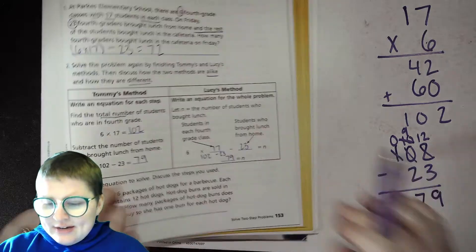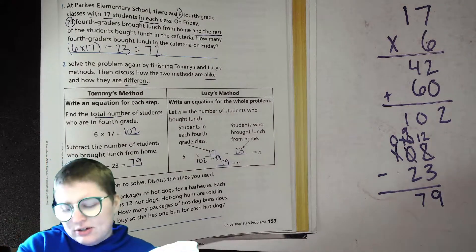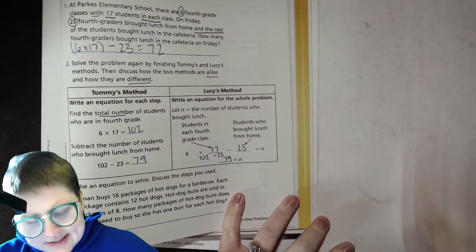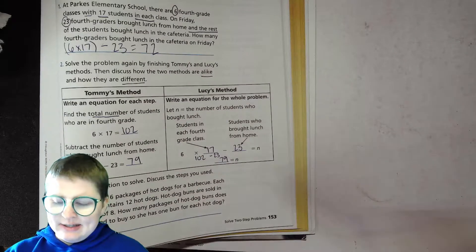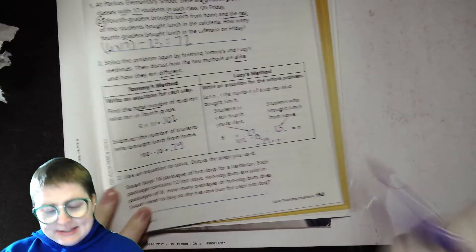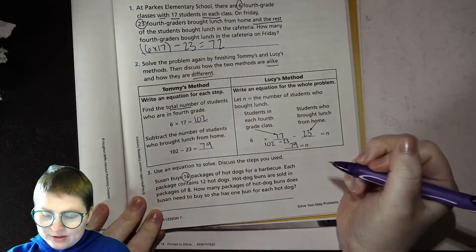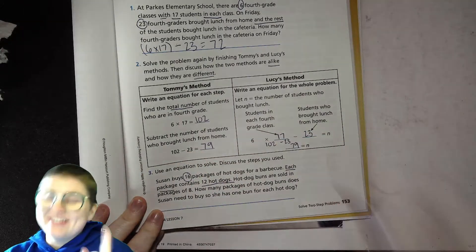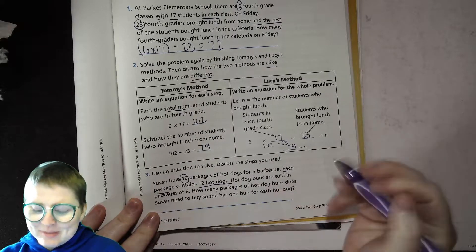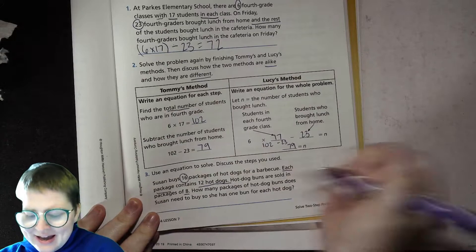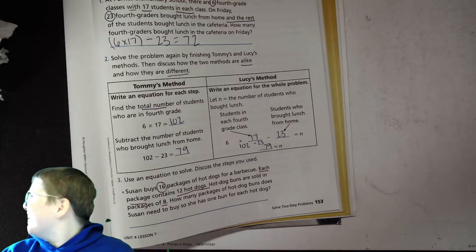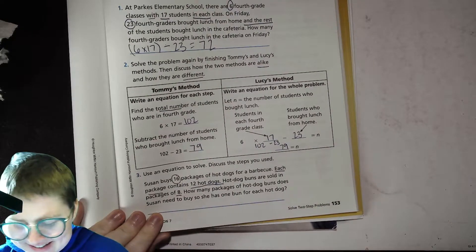Let's do one more, and then you guys will be able to practice on your own and check out your ThinkCentral. So let me erase this here. Use an equation to solve, discuss the steps you used. So we're going to aim for doing something like this, like what we did before. Susan buys 16 packages of hot dogs for barbecue. Each package contains 12 hot dogs. Now this is a fun, true event. Hot dog buns are sold in packages of eight.